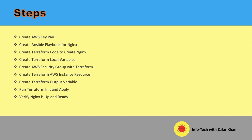Later on, we will create Terraform local variables and create an AWS security group with Terraform and create a Terraform AWS instance resource. Then we will create Terraform output variables. Then finally we will run Terraform initialize and apply it, and then verify whether Nginx is installed or not. These are the steps we are going to do in this video.